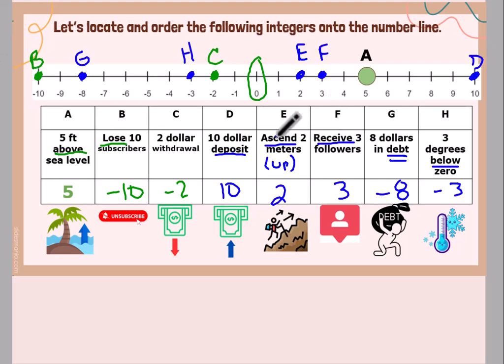Okay. Let's see how you did. A $10 deposit. Deposit means you're putting money into your bank account. So it is increasing. So it's a positive 10. So I plotted my point, labeled it D.